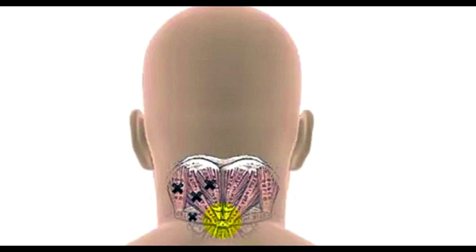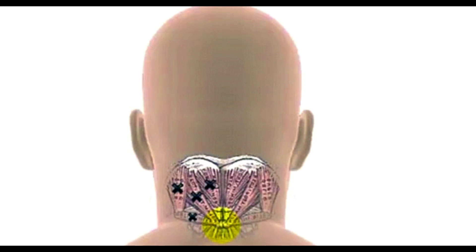The second group of functions is very unusual. The suboccipitals share this particular function only with the rotator cuff muscles in the shoulder. Their primary function is what's called proprioceptive — they sense position through stretch receptors and give information to your brain about the position of your head in three-dimensional space.